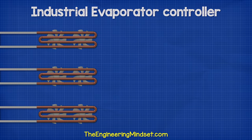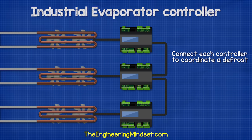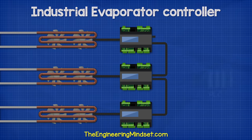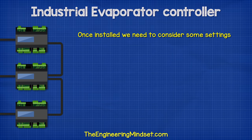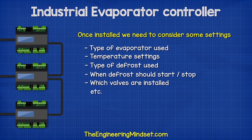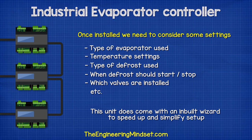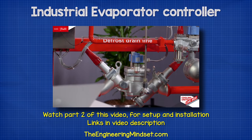There are likely to be multiple evaporators in the refrigeration system, so we install a controller for each individual unit. We can however connect each controller together to coordinate the defrost and use a centralized temperature sensor. Alternatively, we could connect the controllers to a PLC to remotely monitor each evaporator and coordinate defrost by that method. Once installed, we configure settings such as the type of evaporator, temperature settings, type of defrost, when defrost should start and stop, and which valves are installed. This unit comes with a built-in wizard to speed up and simplify the setup — for that, head to the Danfoss part two video linked in the description.